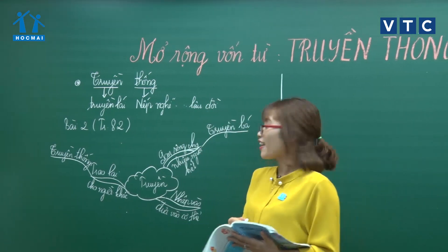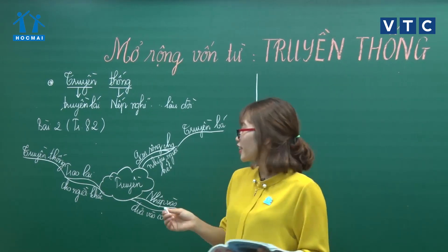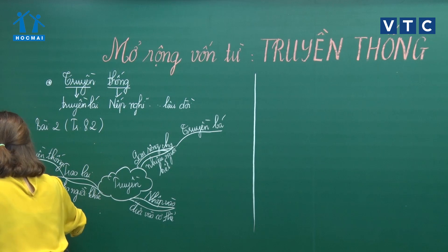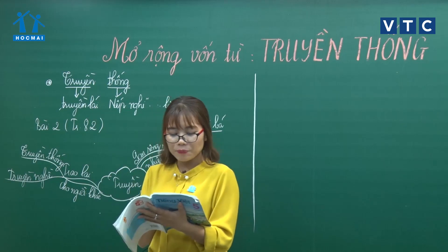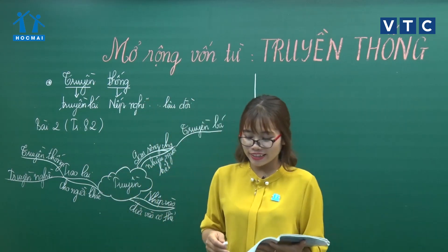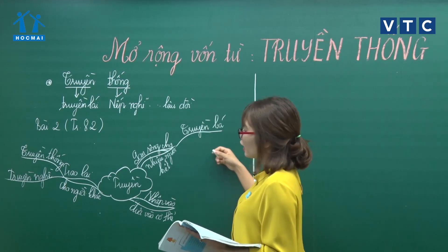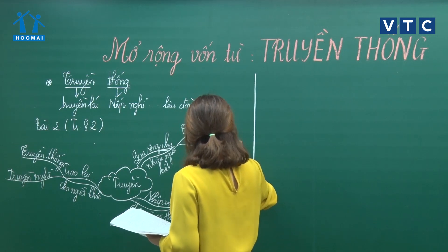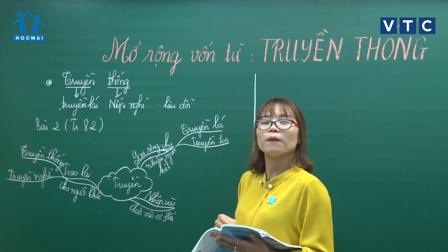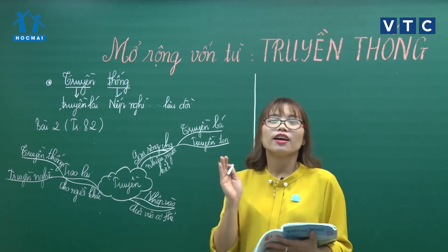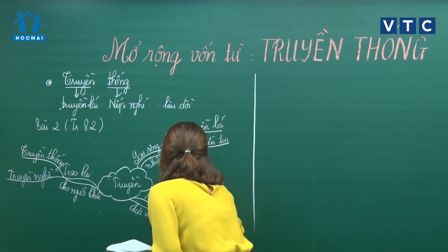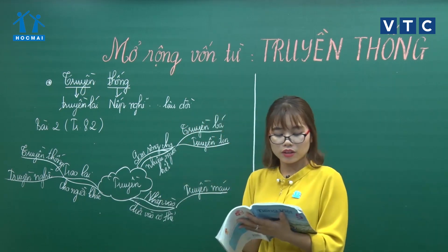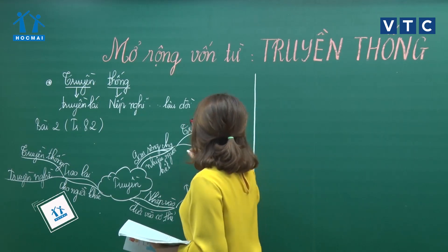Từ tiếp theo là truyền nghề - truyền lại cái nghề cho người khác, nằm ở nhánh trao lại. Truyền tin tức là mang cái thông tin này đến với người này, người kia - cũng thuộc nhóm lan rộng cho nhiều người biết. Truyền máu nhìn một cái sẽ biết thuộc nghĩa thứ 3 - nhập vào cơ thể người thêm một khối lượng máu. Truyền hình - đưa lên truyền hình tức là để nhiều người biết đến, thuộc nghĩa lan rộng.